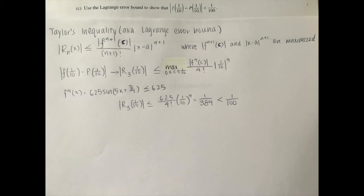Therefore, we have proved that the absolute value of f of one-tenth minus p of one-tenth, which is also the remainder, is less than 1 one-hundredth.